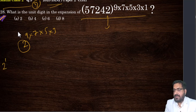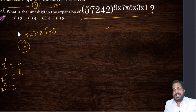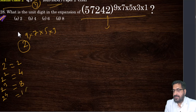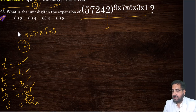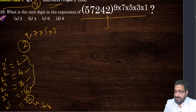2 raised to 1 is 2. 2 raised to 2 is 4. 2 raised to 3 is 8. 2 raised to 4 is 16. 2 raised to 5 — multiply 2 to 16 — you are getting 32. So you are getting this pattern: 2, 4, 8, 6. Again 2 is coming in its place. So this pattern will continue: 2, 4, 8, 6. This pattern is very, very important here — it keeps on repeating after every fourth step.